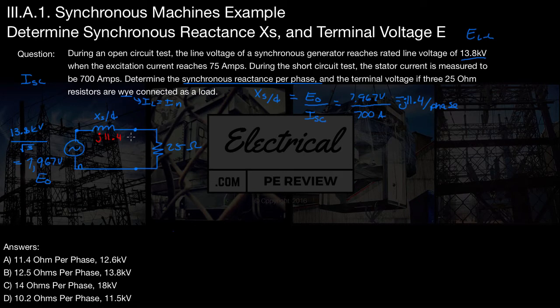So now we want to find this current, which is going to be IN. So we know that IN can be found as voltage over impedance.